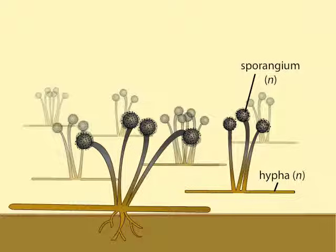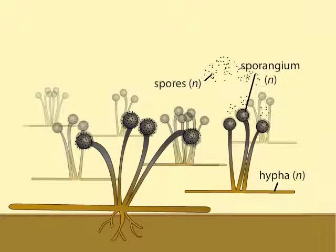During asexual reproduction, spore-filled sporangia develop at the tops of stalk-like hyphae. The sporangia and hyphae are haploid. Sporangia break open and their haploid spores disseminate.